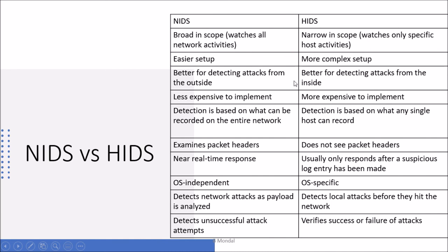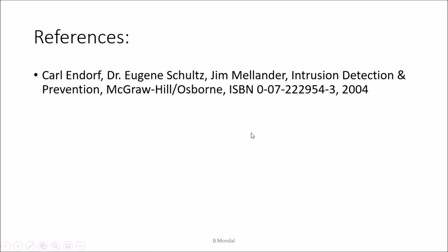The key differences are: network-based IDS are broad in scope while host-based are narrow in scope; network-based are easier to set up while host-based are more complex. You can read through the full comparison. Thank you for watching.